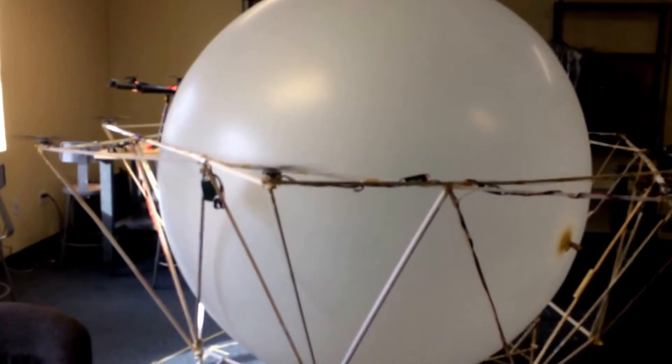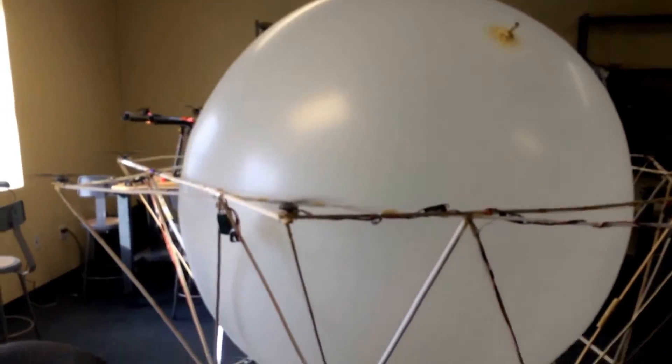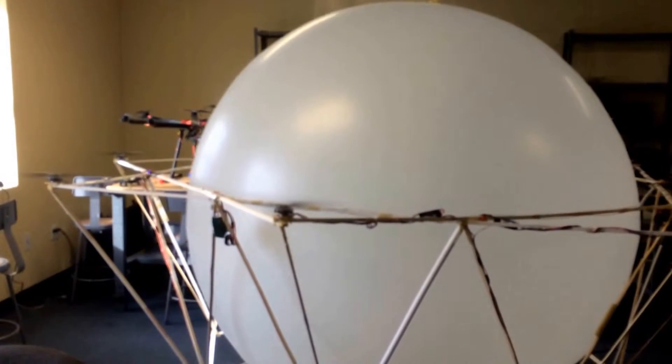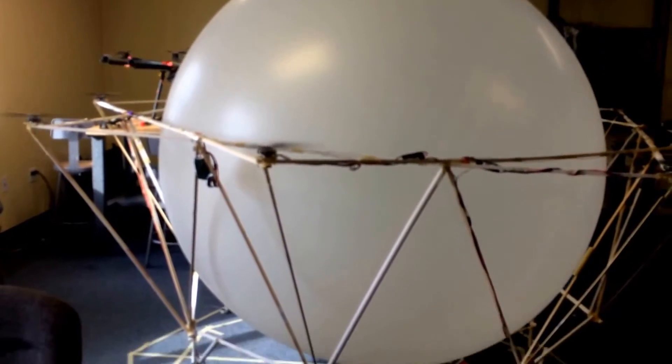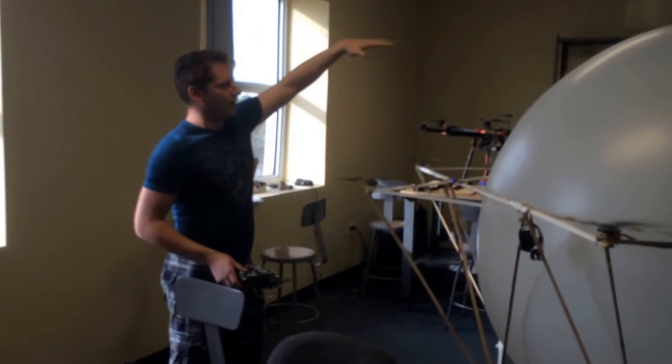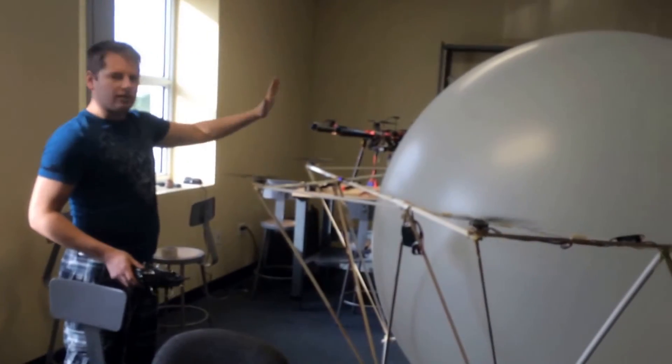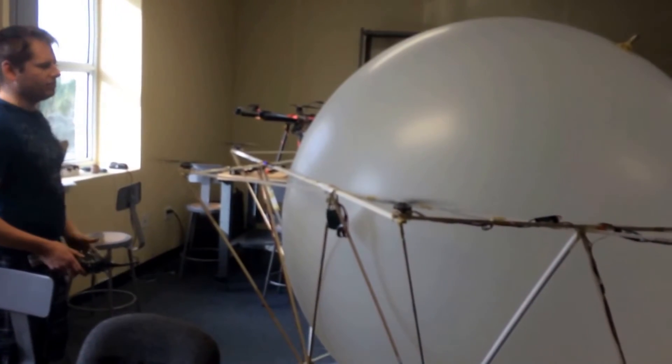You can see all the motors running. There we go. There's some vortexes underneath. Now, what holds the balloon down on top is a tarp that goes over the top and anchors the balloon to the frame to stop it from flying away.